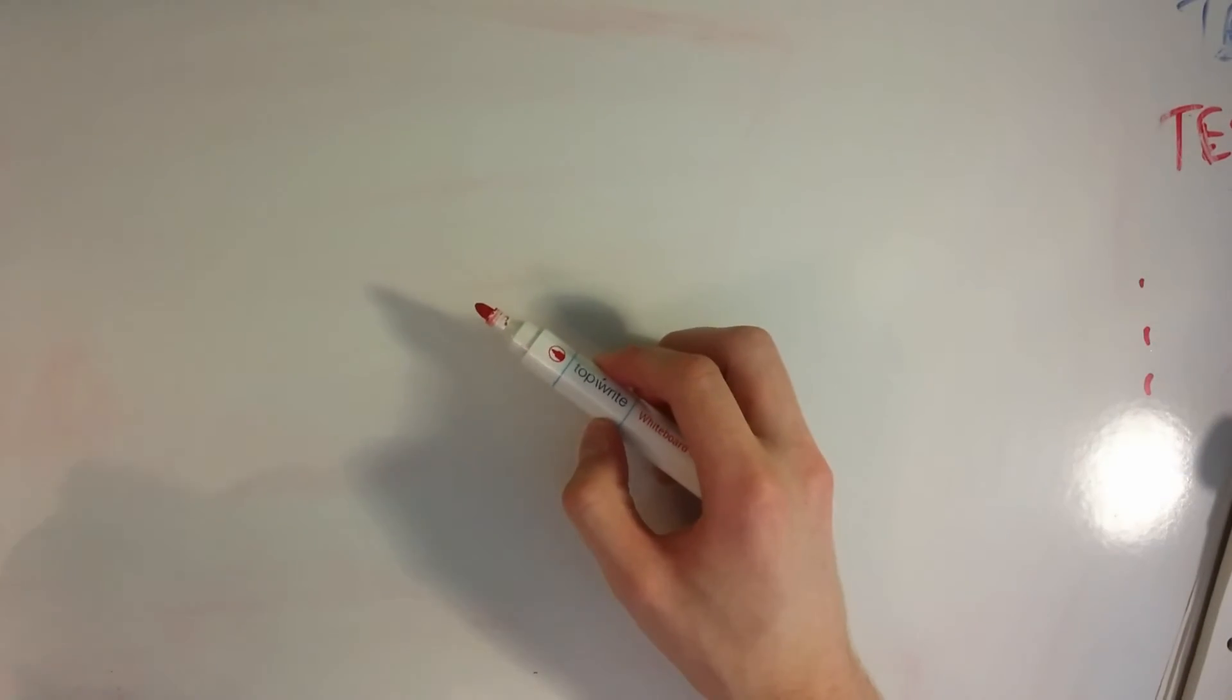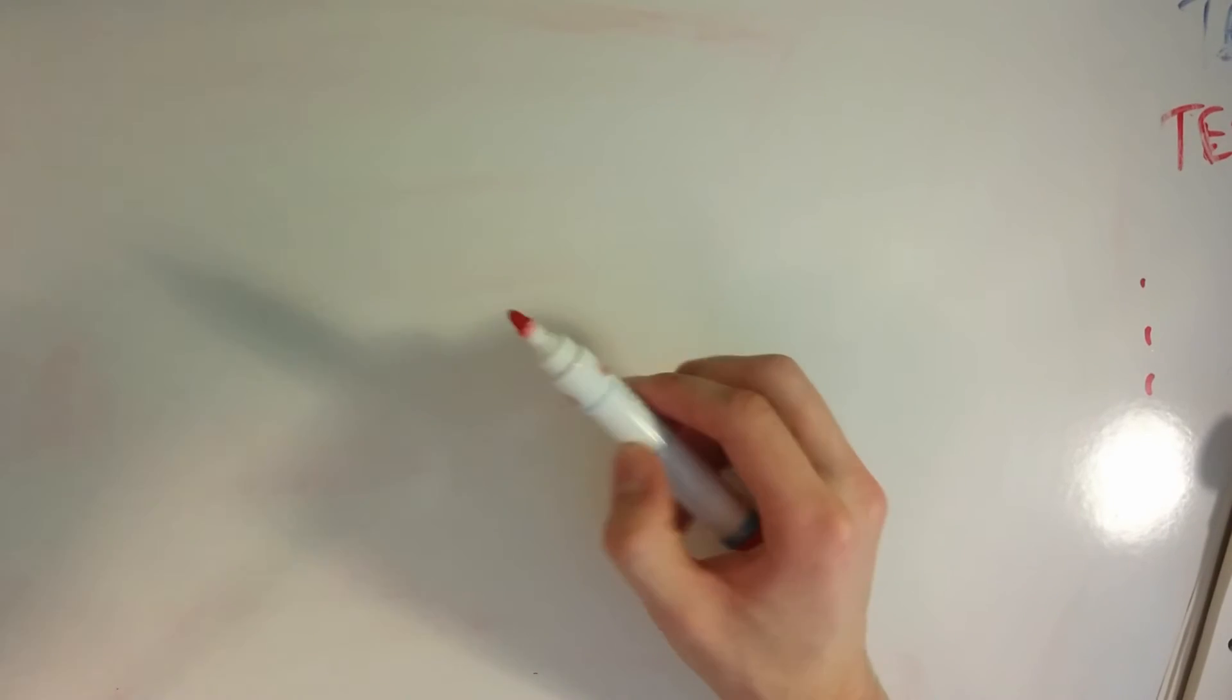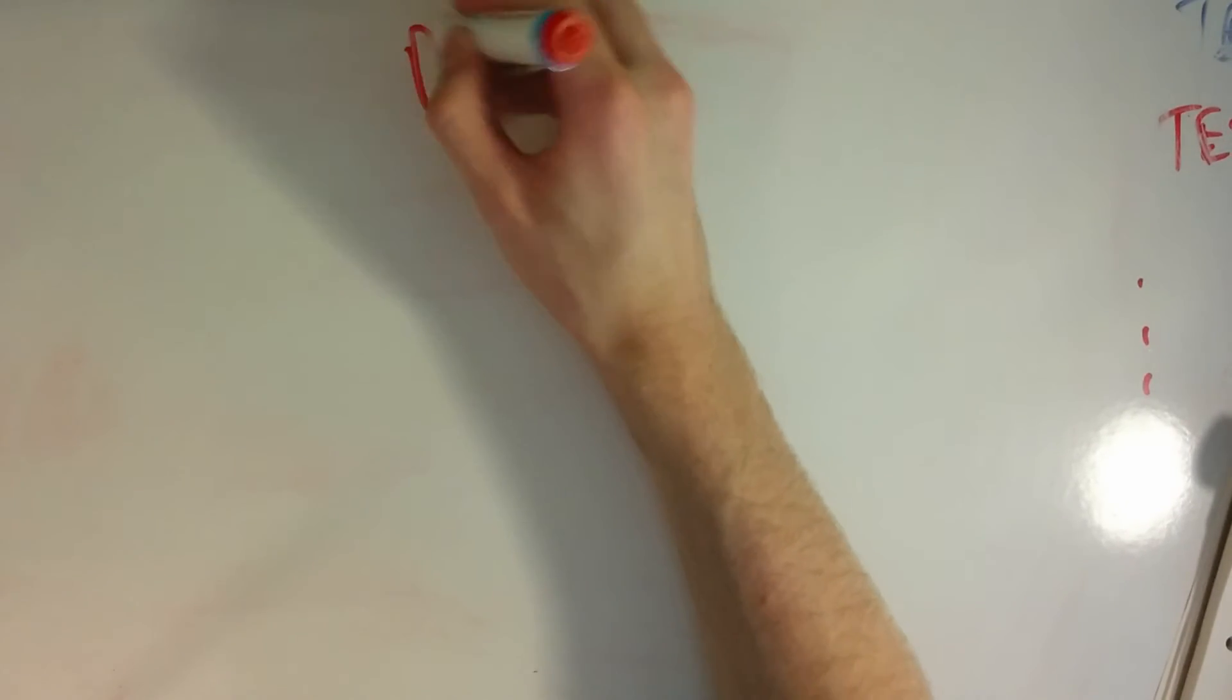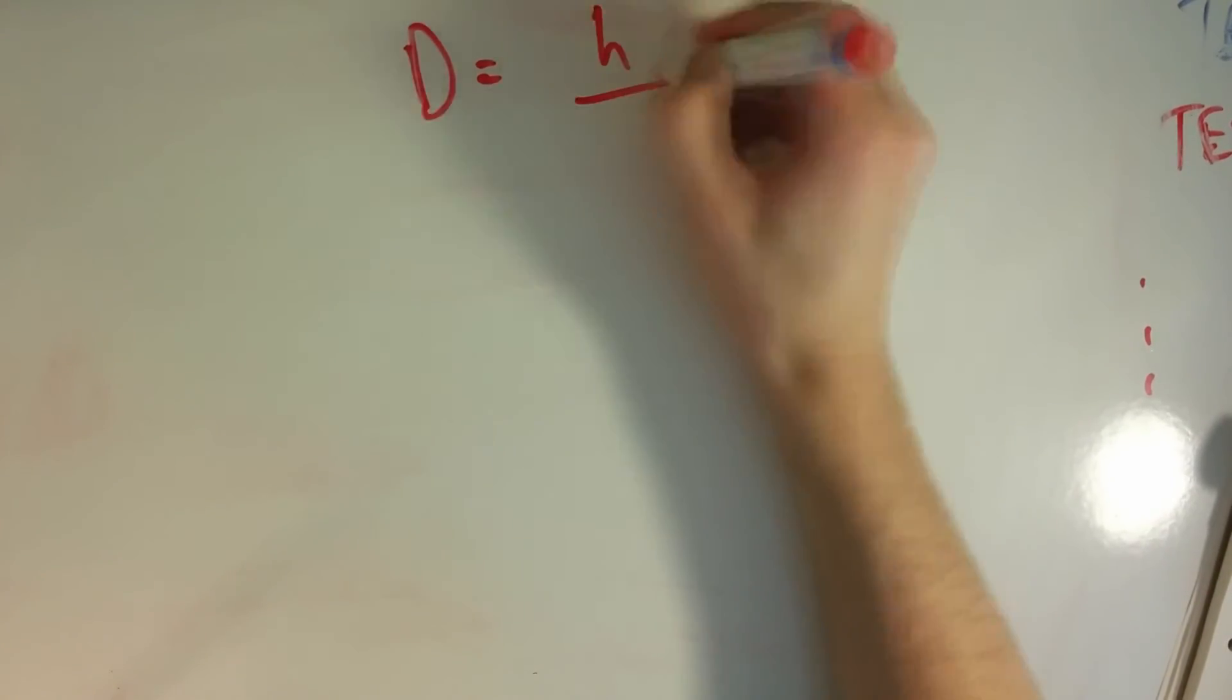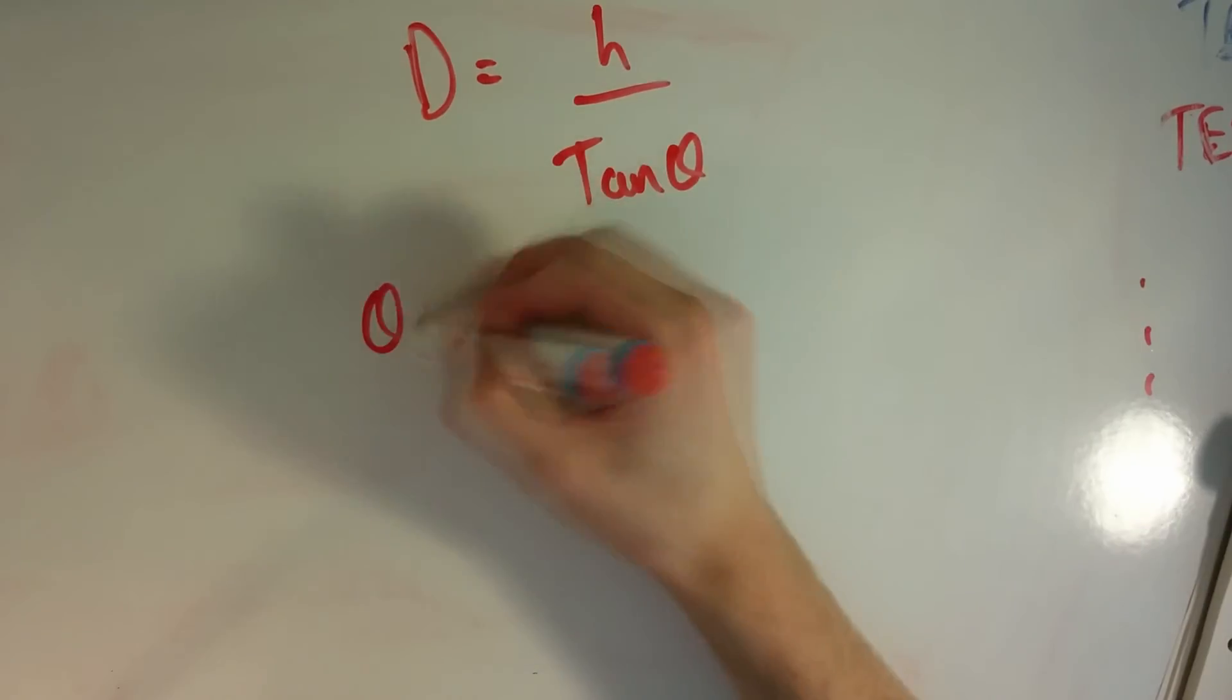These are the equations that we can now use. So you've got d is h over tan theta, right? And so theta means the equation theta equals pfc, and we have these worked out.